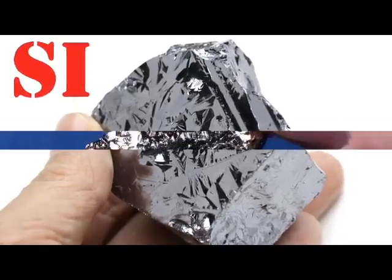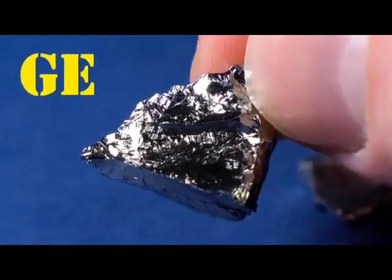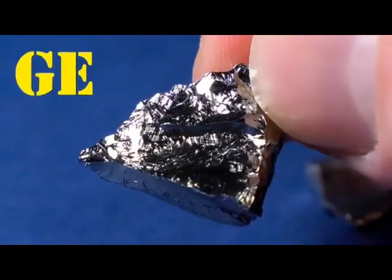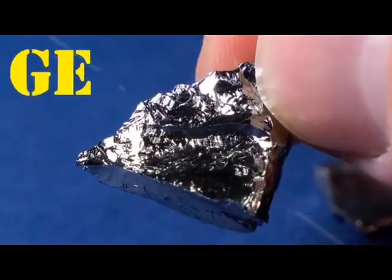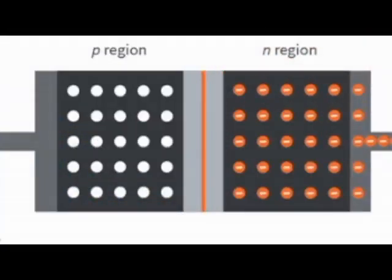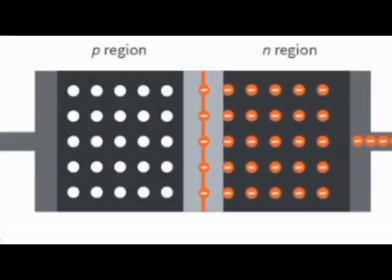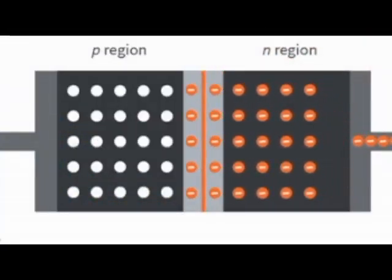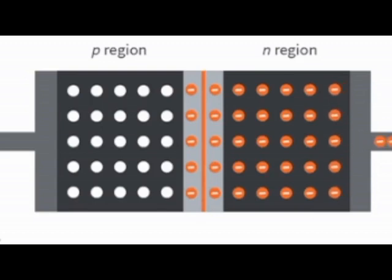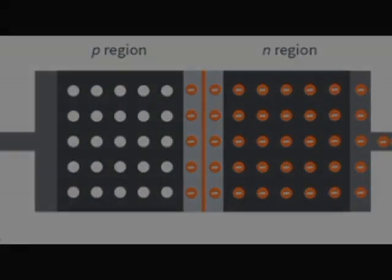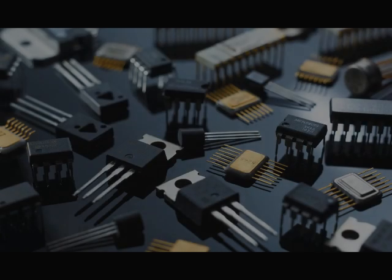Transistors are made of semiconductor materials such as silicon and germanium. A transistor has N and P type junctions in its structure. In our topic on diodes, you learned how to make semiconductors and connect P and N types, so we refrain from repeating those contents in this video.